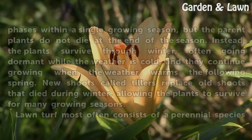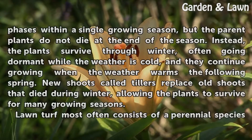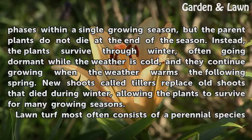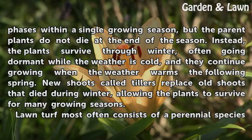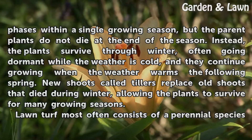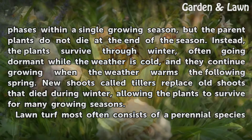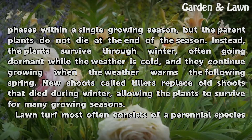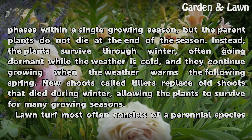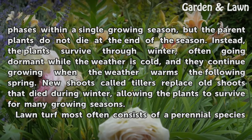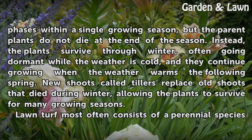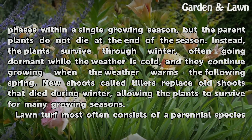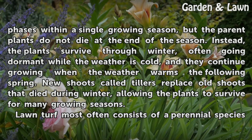Perennial grasses complete the reproductive phases within a single growing season, but the parent plants do not die at the end of the season. Instead, the plants survive through winter, often going dormant while the weather is cold, and they continue growing when the weather warms the following spring. New shoots called tillers replace old shoots that die during winter, allowing the plants to survive for many growing seasons.